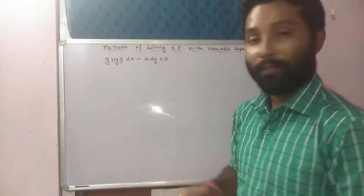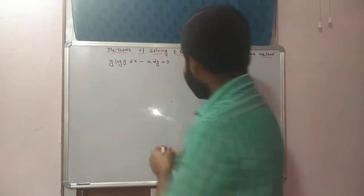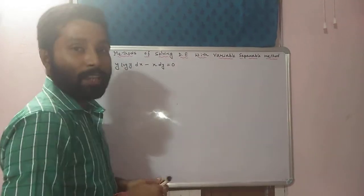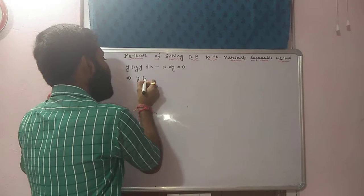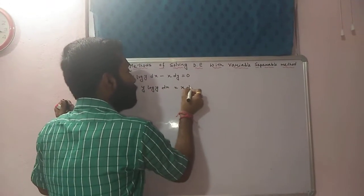So how can we solve this differential equation? By using variable separable method. In the second example, I have explained this type of question. If there is plus or minus sign, shift the second term to the right hand side. That is y log y dx equals x into dy.